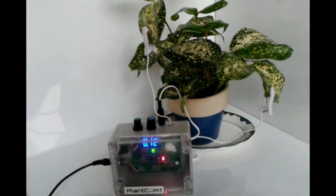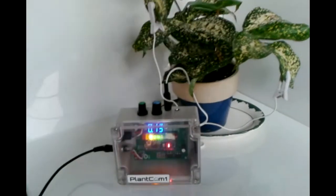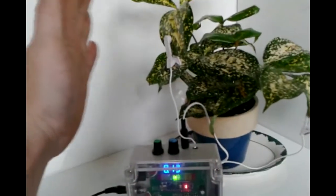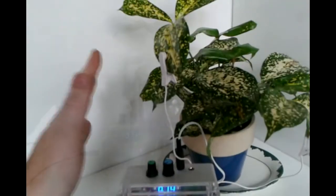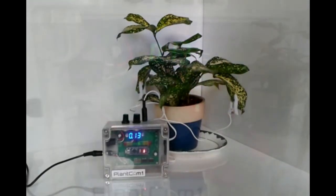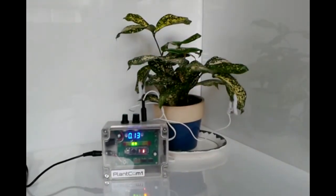The higher the sensitivity level, the more chatty the PlantCom 1 will be, and the smallest changes can be observed. For long-term plant activity observance, adjust the sensitivity knob until PlantCom 1 only makes sound sparsely. This will allow you to observe only more major plant activities.